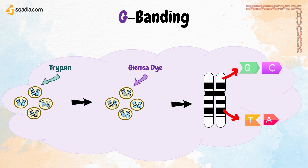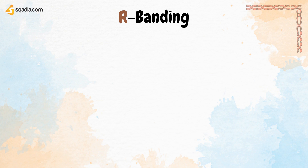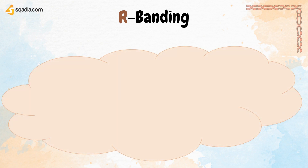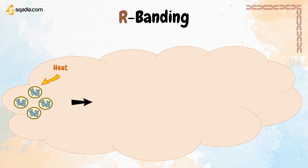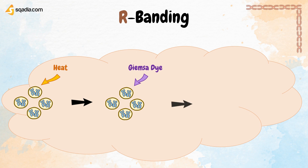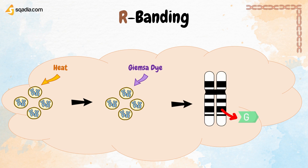The next type of banding is R-banding. It is called R-banding because it is a reverse of Giemsa staining, meaning dark bands in G-banding are light bands in R-banding and vice versa. In this type of staining, chromosomes are denatured with heat, then stained with Giemsa dye. Dark bands are rich in guanine and cytosine, and light bands are rich in adenine and thymine.